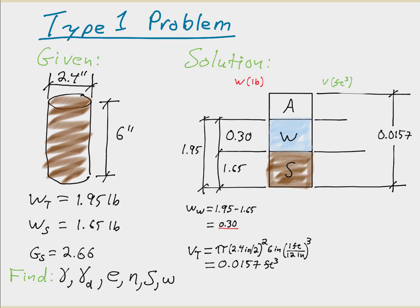We now use the unit weight of water and the unit weight of the solid phase to convert the weights on the left-hand side to volumes on the right. The unit weight of water is 62.4 pounds per cubic foot (or 9.81 kilonewtons per cubic meter). So the volume of the water is 0.30 pounds divided by 62.4 pounds per cubic foot, giving 0.0048 cubic feet, which we record on the diagram.